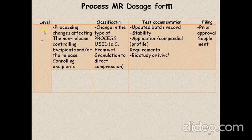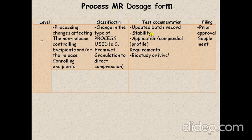Level 3 process change involves a change in the type of process — for example, changing from wet granulation to direct compression. This is a major change in your process. Required documentation includes updated batch record, stability, and compendial profile. A bioequivalence study is required. Record all changes in the prior approval supplement.